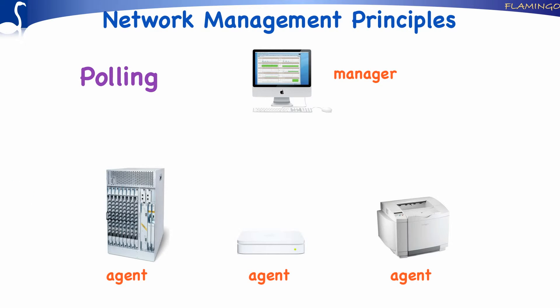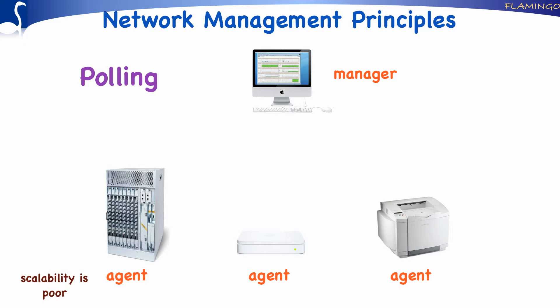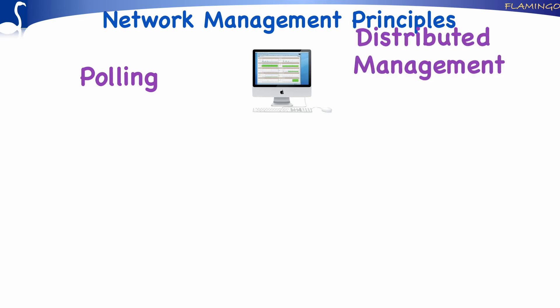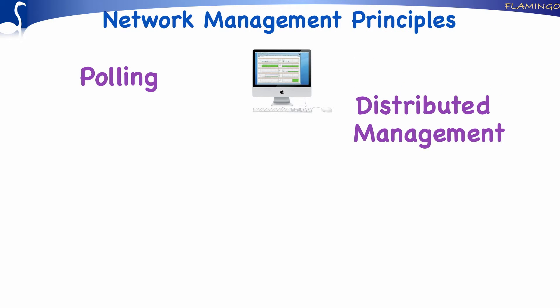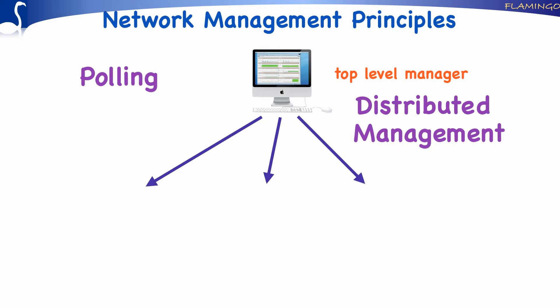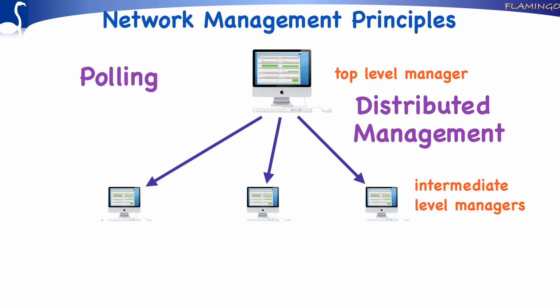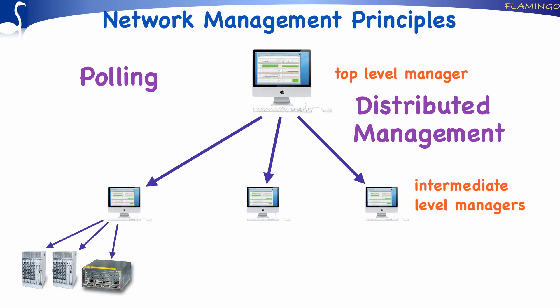In addition, the manager will have to handle a lot of management traffic. Scalability is therefore poor, and if thousands of devices need to be polled, the tasks of the manager should rather be distributed over several managers. To distribute the management functionality of the original manager, a hierarchy of managers can be created. In such hierarchies, the top-level manager interacts with the intermediate or mid-level managers, which in turn poll the various agents. Intermediate-level managers may be tailored to the polling of one specific type of agent, such as all routers, or generic for all kinds of agents.